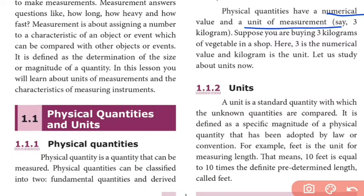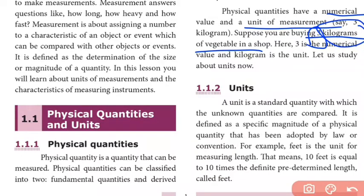For example, 3 kilograms of vegetables: here 3 is the numerical value and kilogram is the unit of measurement. So every physical quantity has one numerical value as well as one unit of measurement.